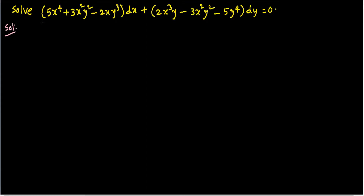This is the next problem in the concept of exact equations. Solve: 5x⁴ + 3x²y² - 2xy³ dx + (2x³y - 3x²y² - 5y⁴) dy = 0. We have to find the general solution of this equation.